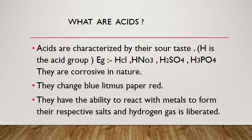The next important characteristic for identification of an acid is they change blue litmus paper red. When you dip the blue litmus paper, which is an indicator, in any acid, it immediately changes its color from blue to red. That is the test for acid.